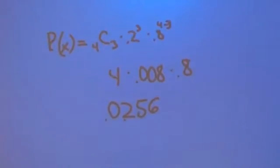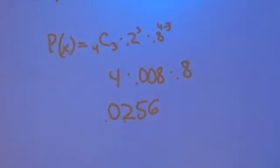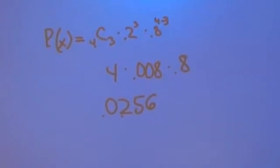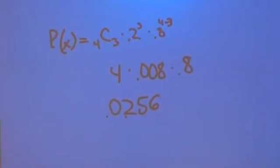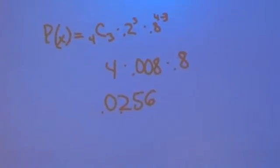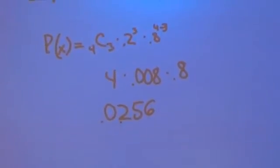So you have P(x) equals 4C3 times 0.2 to the third times 0.8 to the 4 minus 3. So you get 4 times 0.008 times 0.8, and that equals 0.0256.